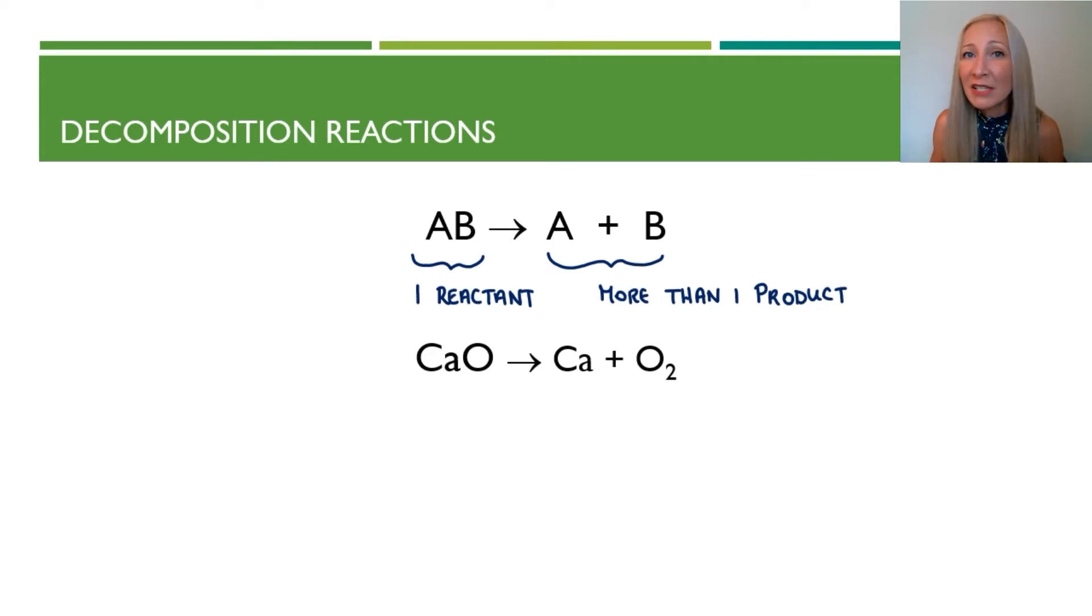Back before electricity was invented, theaters used calcium oxide and used this glow from calcium oxide to illuminate the stage and shine a light on the actors and actresses on the stage. So the term limelight refers to this compound of calcium oxide.